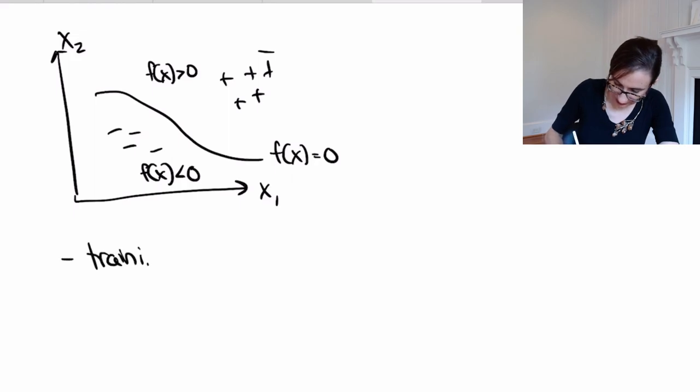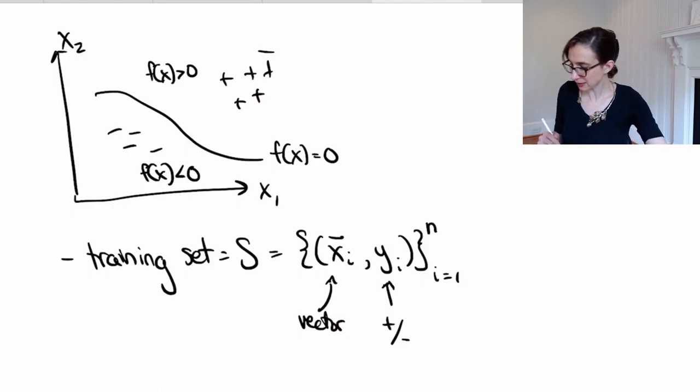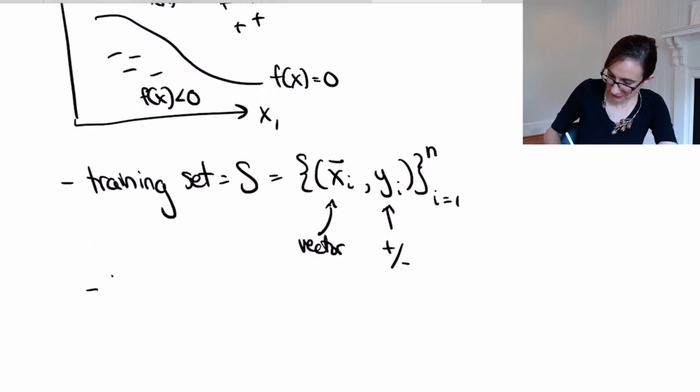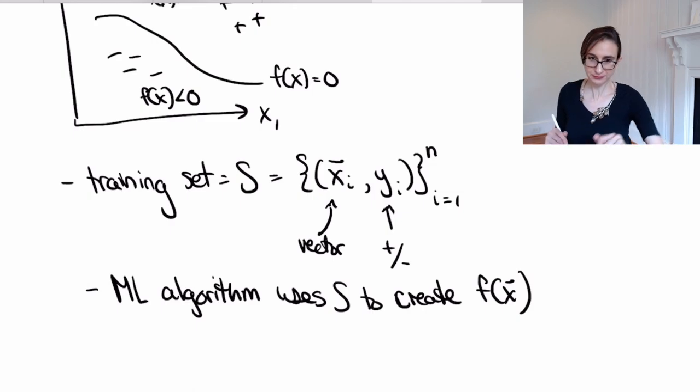So the training set that we use to train the model f of x is generally called S. So S is a collection of feature vectors and labels. And this is the typical notation. So x is a vector. And y, in this case, is plus or minus one. The labels can get much more interesting later, but for now we're just going to predict yes or no, the answers to yes or no questions. And then we will have a machine learning algorithm which uses the dataset S to create a model, to create our model f of x.